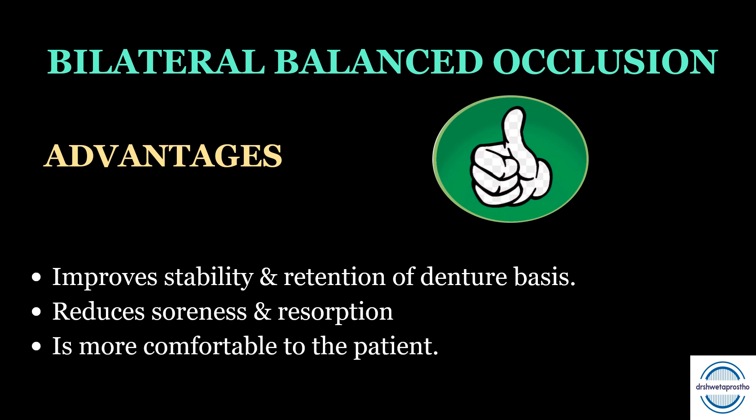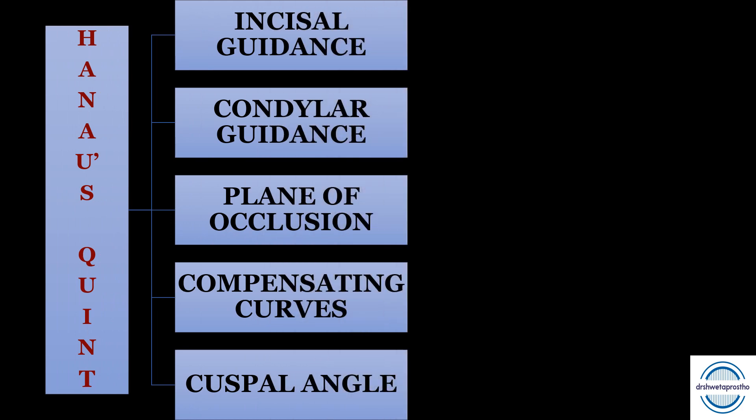Advantages of balanced occlusion: first, it improves stability and retention of denture bases by providing simultaneous contact on both sides during working and non-working movements. Second, it reduces soreness and resorption caused by denture base movement, as bilateral balance limits movement. Third, it is comfortable to the patient because balance is maintained along with chewing efficiency. The five factors that affect bilateral balanced occlusion are known as Hanau's quintet: incisal guidance, condylar guidance, plane of occlusion, compensating curves, and cuspal angle. This is a separate short note topic with a dedicated detailed video.